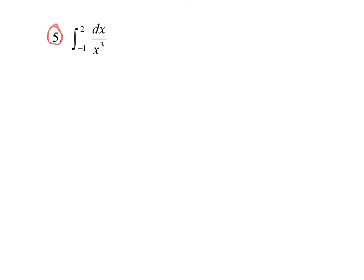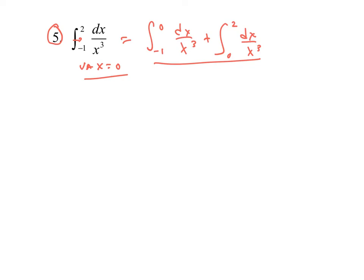Number five — why is this an improper integral? We have a vertical asymptote at x = 0. When we have that vertical asymptote at x = 0, it falls between the two limits of integration, so we're going to have to split this up into two parts: the integral from -1 to 0 of dx/x³, plus the integral from 0 to 2 of dx/x³.